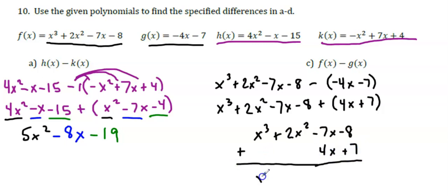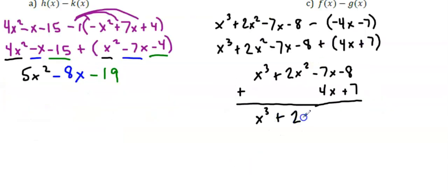And then I'm adding 4x + 7. So I want to make sure that I line them up so they're with like terms. That gives me x³ + 2x² - 3x. -8 + 7 is -1. And there's our answer: x³ + 2x² - 3x - 1.